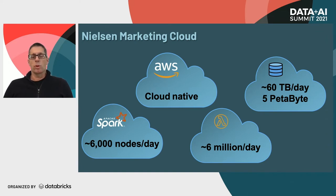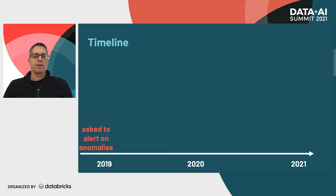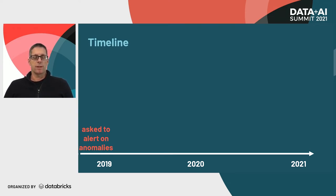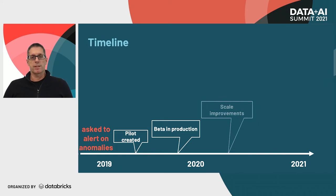In 2019, we were asked to alert on anomalies within our data. Our users found that in many cases, they have a hard time tracking data sets in the system, and in many cases they find out about problems in the data after customers complain. This is obviously not a great situation to be in. So we set out to build an anomaly detection system that can run at a huge scale, starting with a pilot, going into beta and then production, and then spending time on scale improvements and redesigns.